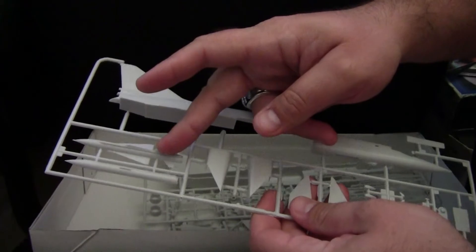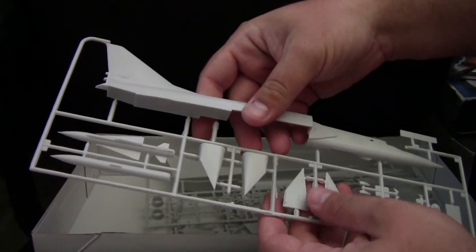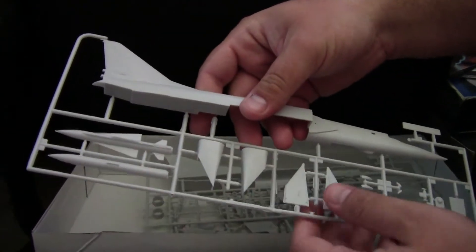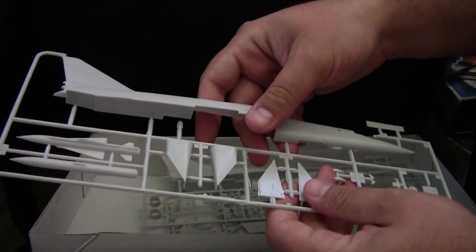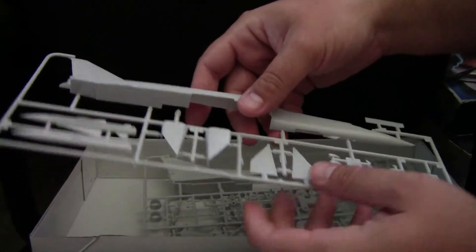Unfortunately, you only get one missile. I do know it can carry up to three of these, but the kit unfortunately only gives you one, though it does give you the weapon pylons, which we'll see in a minute.